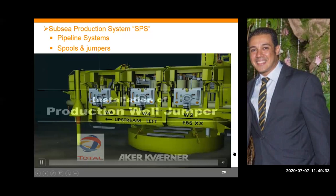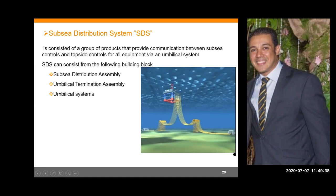Now we'll talk about the subsea distribution system. I need to control the production system — electrically, hydraulically, and through chemical injections — through this system. It consists of a group of products providing communication between subsea controls and topside controls for all equipment via an umbilical system. The building blocks of the subsea distribution system are: the subsea distribution assembly, umbilical termination assembly, and the umbilical system.